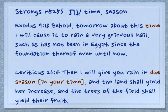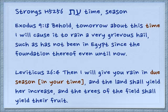Exodus 9:18: 'Behold, tomorrow about this time — this time period — I will cause it to rain a very grievous hail, such as has not been in Egypt since the foundation thereof, even until now.' In Leviticus 26:4, 'I will give you rain,' translated as 'in due season,' which is literally 'in your time.' And the land shall yield her increase, and the trees of the field shall yield their fruit.